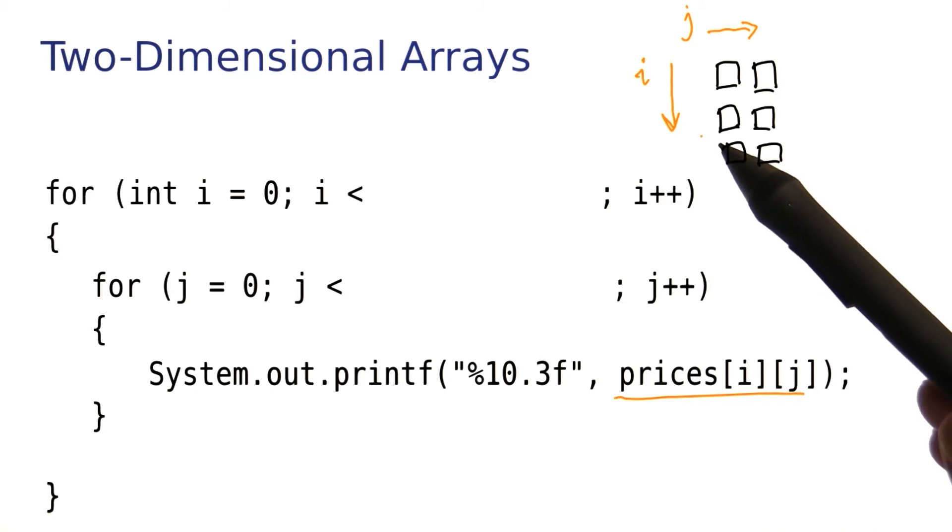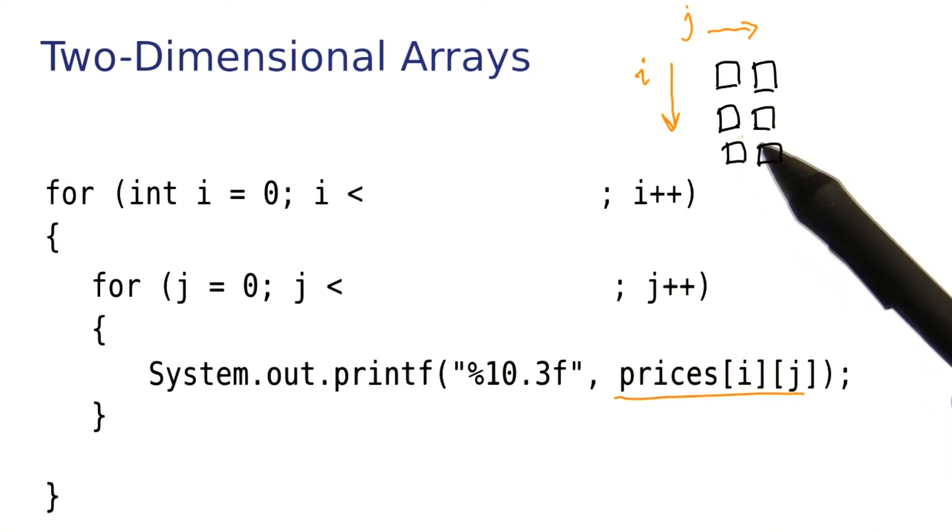Then the outer loop would pick the next row. We print these two, and then the outer loop picks the last row, and we print those two.